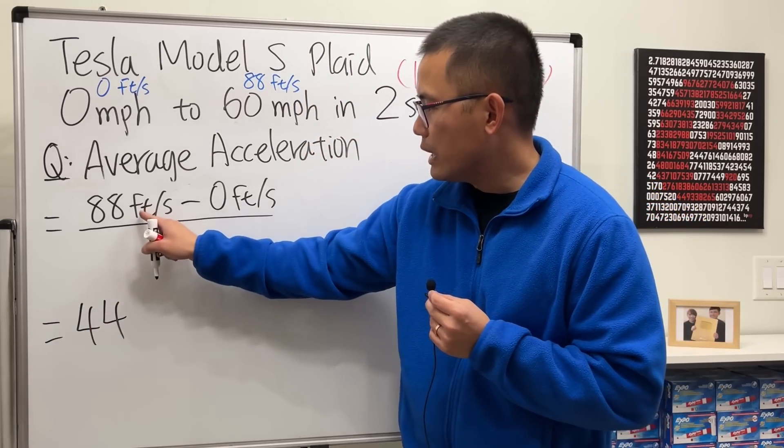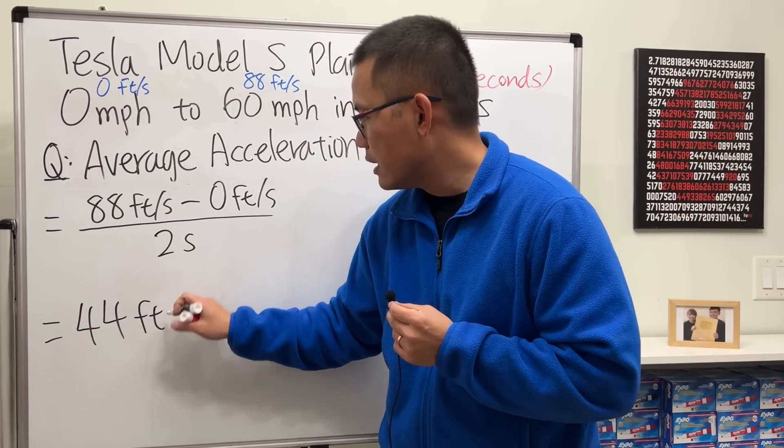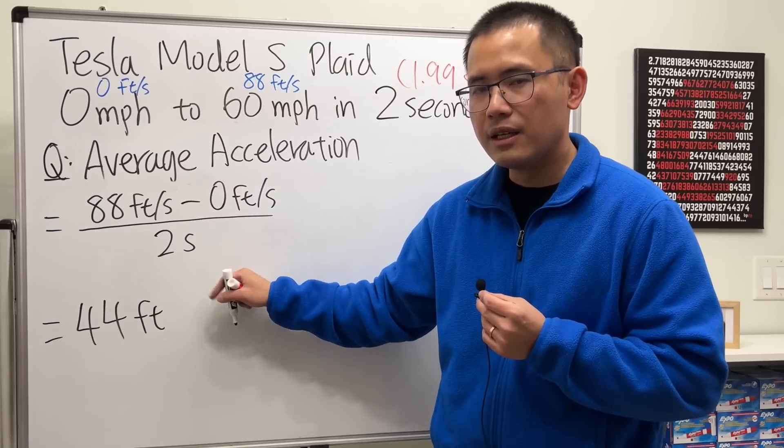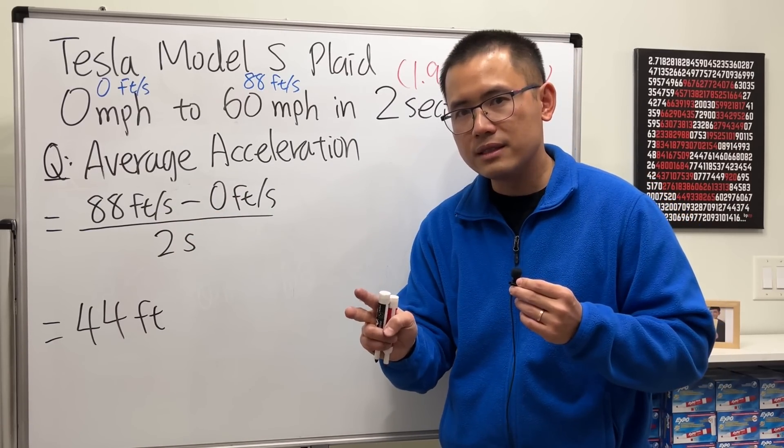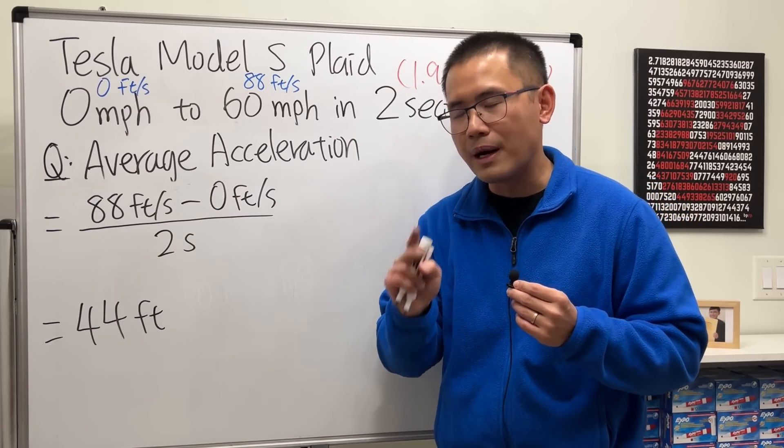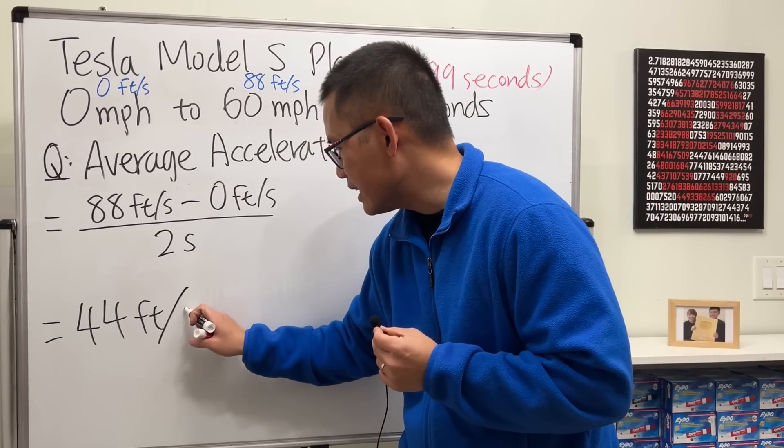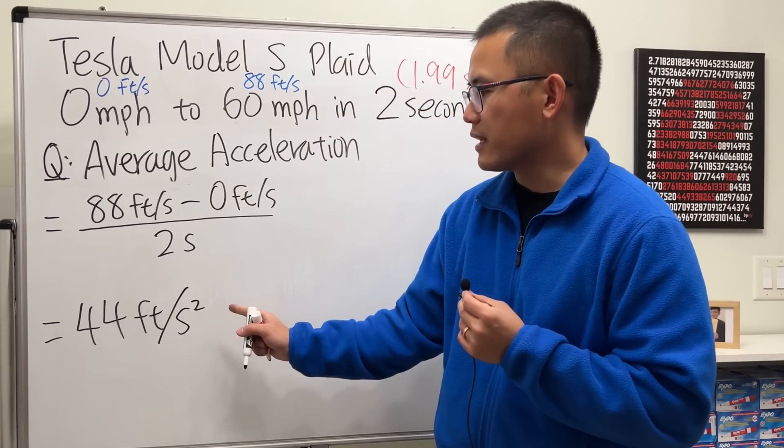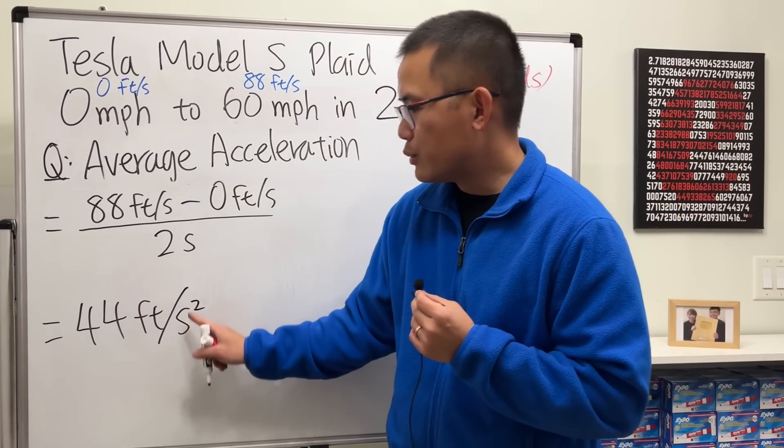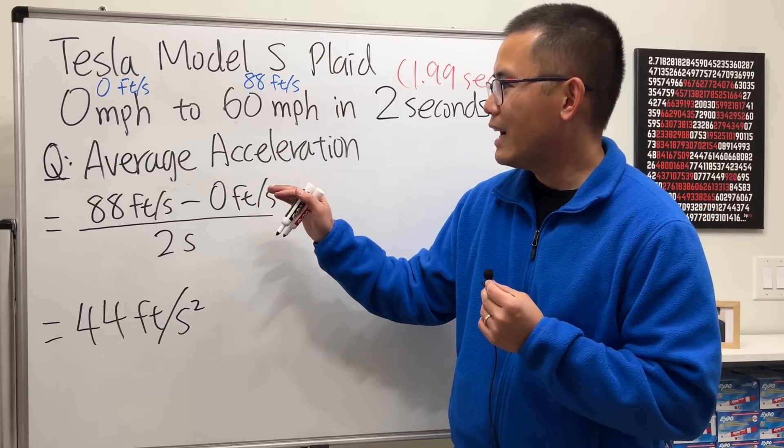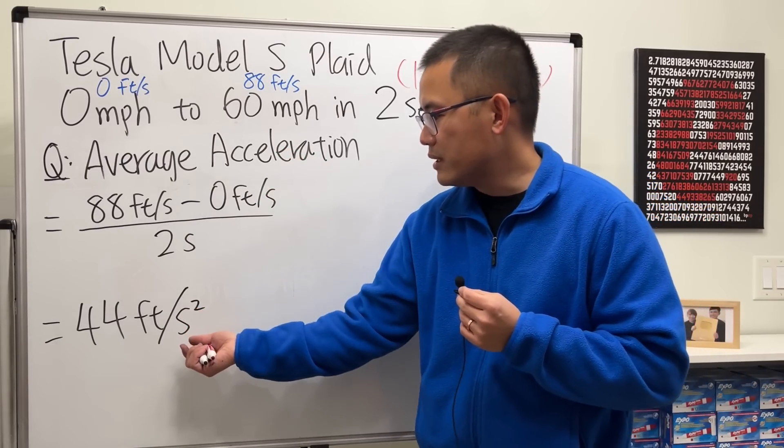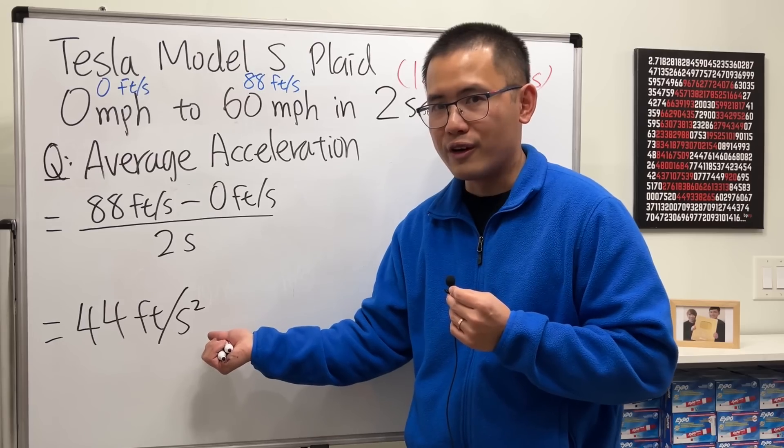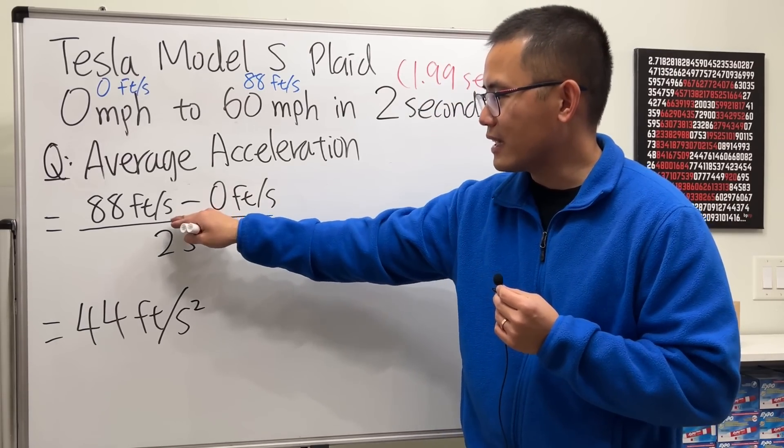Be careful with the unit. We have feet per second per second, per second, so we divide the second twice so it's second to the second power, so per second squared. And you can write it down like this. So this is the reason why when we have the acceleration the unit is per the time unit squared, right? Because you divided time twice.